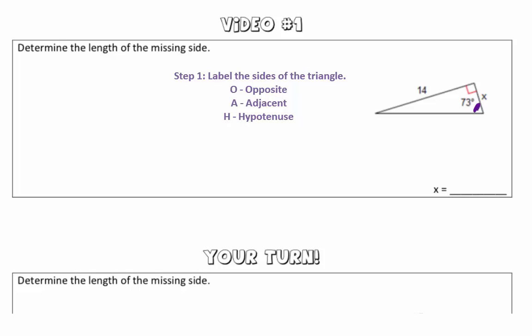So we know that this angle right here is 73 degrees, so therefore the side across from that angle, or opposite of the angle, we're going to label with O for opposite. The one next to it, or touching it, but that's not the hypotenuse, is adjacent. And the side across from the 90 degree angle is always the hypotenuse.